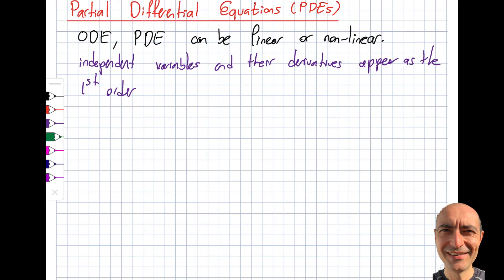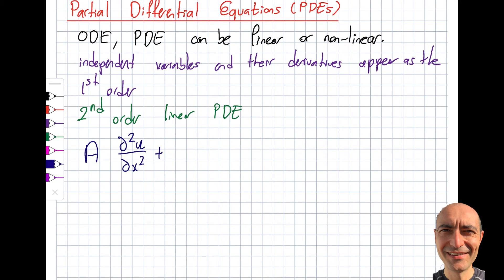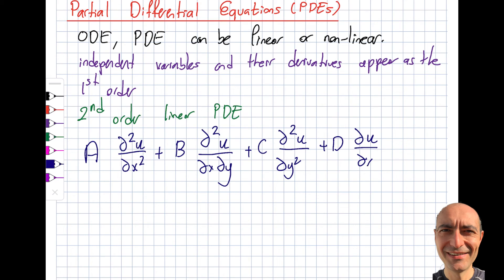Here is what a linear PDE looks like: the independent variables and their derivatives appear to the first order. I'll write a second-order linear PDE since that's common and what upcoming segments will cover. The general form is: a·(∂²u/∂x²) + b·(∂²u/∂x∂y) + c·(∂²u/∂y²) + d·(∂u/∂x) + e·(∂u/∂y) + f·u = g.